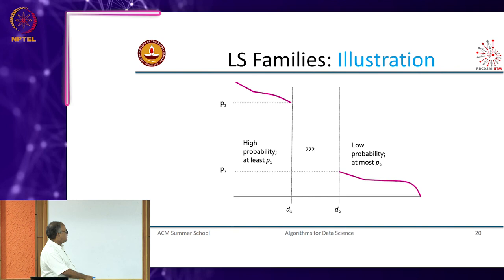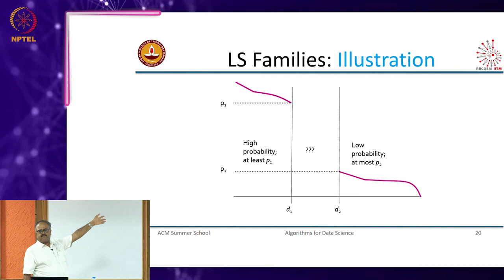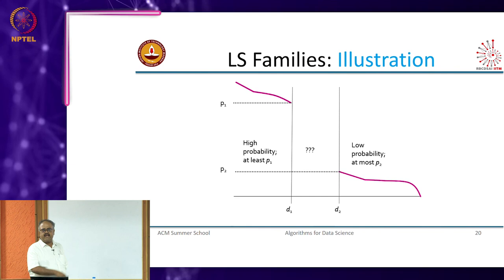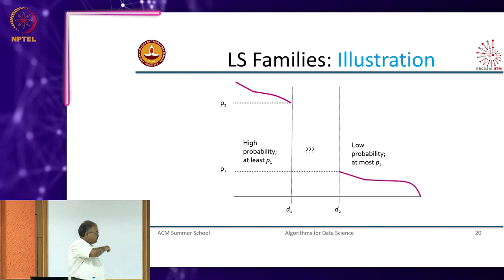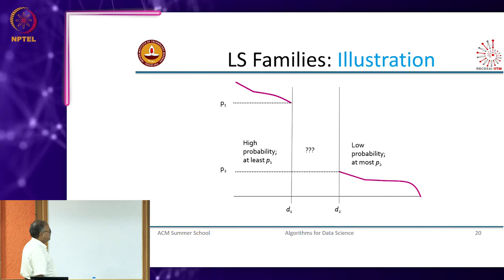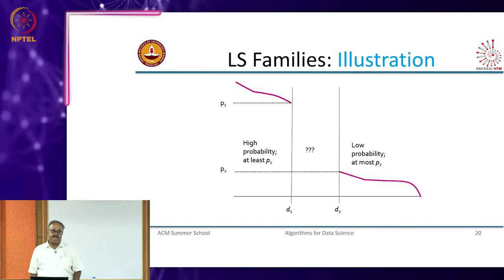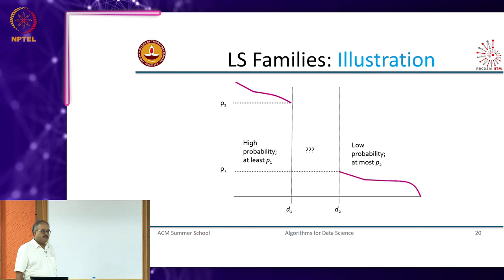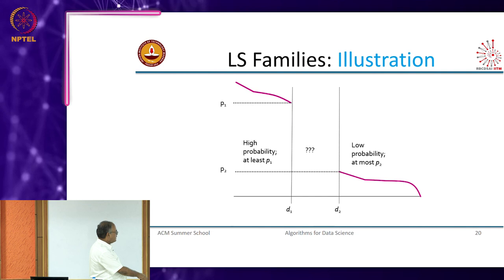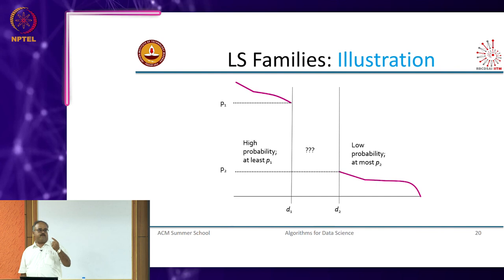So I have two thresholds D1 and D2. If my distance is less than D1 the probability should be P1 or greater. The X axis is the similarity between the data points and the Y axis is the probability that you will declare them to be equal — declare them as a candidate pair, or in this case the hashes will be equal. When you characterize this family of hash functions you typically do not specify anything about the in-between region.